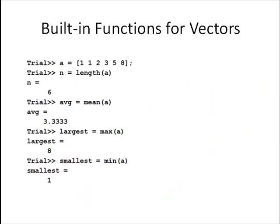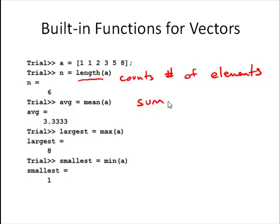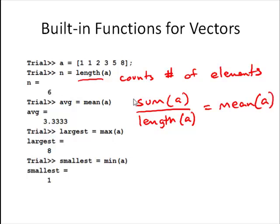Let's look at some built-in functions that work with vectors. The length function counts the number of elements in a vector. The mean function finds the average — that's equal to sum(a) divided by length(a). So these functions are related. The max function finds the largest element in a, and the min function finds the smallest. You can use the MATLAB help for more information on these.